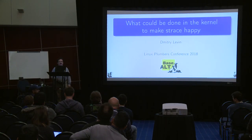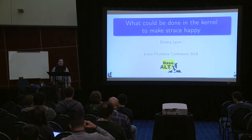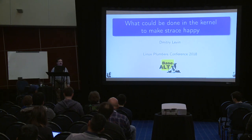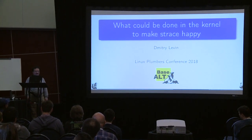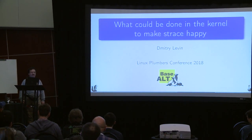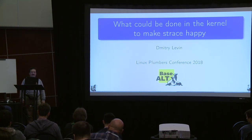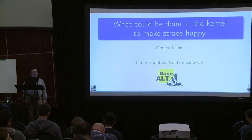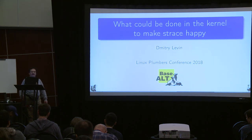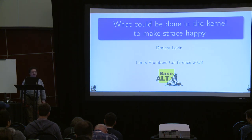I'll be talking about things we found out over these nine years. So what could be done in the kernel to make strace happy? But why would you bother? If you think of strace as a project which is a few months older than the Linux kernel, it might be nice to make elders happy. And when you make strace happy, you make not just strace users happy - you're also making happy other projects, like debuggers that use the ptrace interface, and other projects that call the system calls directly. So it actually might be useful not just for strace.